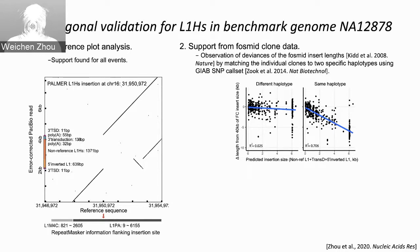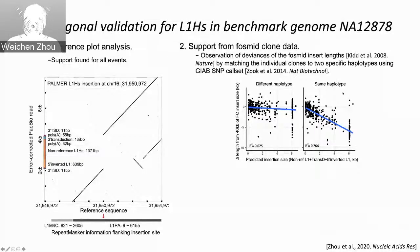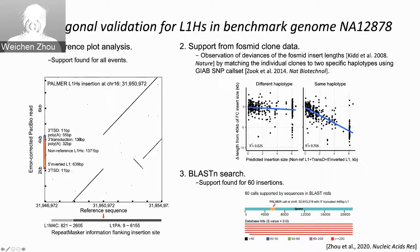Then we validated using Illumina data. Using genome SNP information, we assigned the supporting PacBio reads and the Illumina paired-end reads into two haplotypes. If they are in the same haplotype, we observe a linear correlation between the L1HS insertion length and the insert size of the Illumina pairs. This is the same haplotype for the PacBio reads versus the different haplotype. Additionally, we used BLAST-N and found six insertions that could be supported by other previous studies in the BLAST NR/NT database.